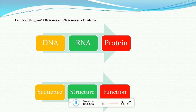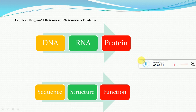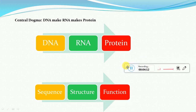Now if you talk about the central dogma of a bioinformatician, it will be sequence, structure, and function. From a sequence we generate a structure, and from the structure we determine the function — we become aware of what the function of that particular structure is.